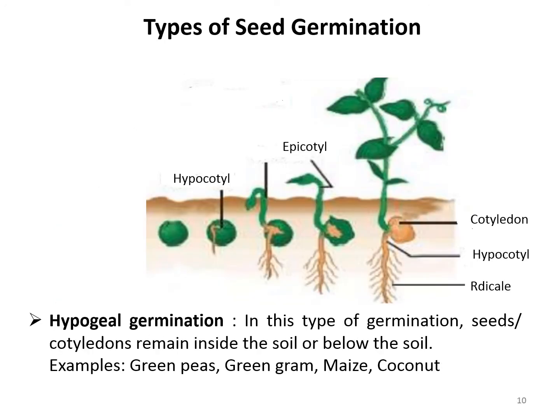Regarding hypogeal germination — 'hypo' meaning below and 'geo' meaning earth — in this type of germination the seed or cotyledon remains inside or below the soil. The cotyledon stays underground where it eventually decomposes. Examples include green pea, gram, maize, coconut, etc.